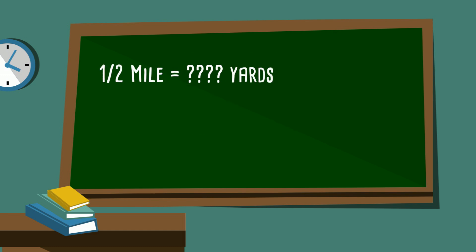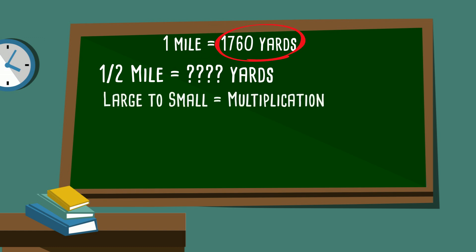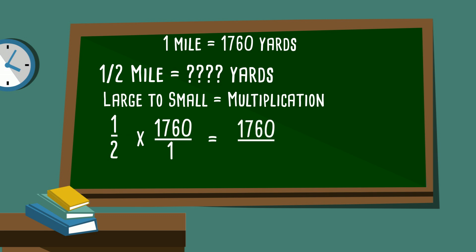Now let's look at this one — this may seem a little tricky. We have half a mile equals how many yards. Remember, our hint is 1 mile equals 1,760 yards. We're going from large, the mile, to small, the yards, so we multiply. We're just going to multiply two fractions: one half times 1,760 yards, converting 1,760 into a fraction by placing it over one. When you multiply fractions, you multiply straight across. So we have 1,760 yards divided by two, and that equals 880 yards.